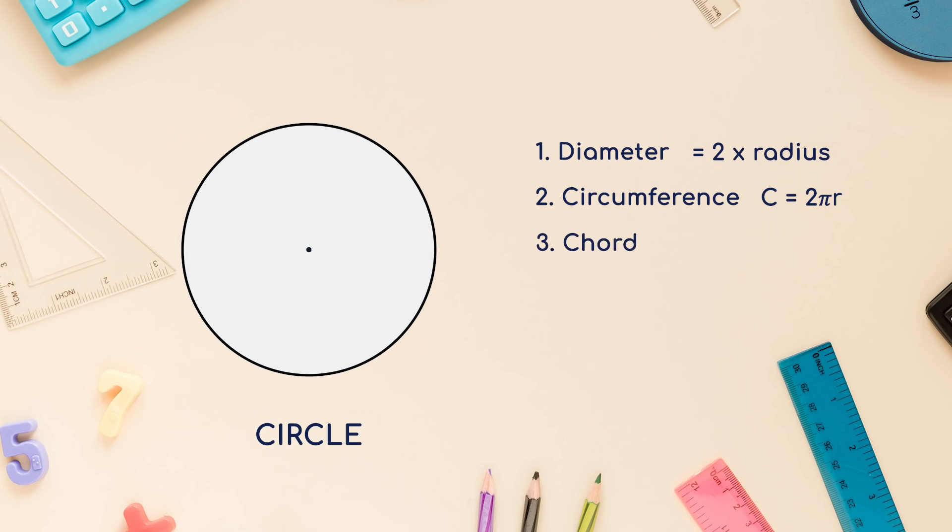3. Chord, a chord is a line segment joining any two points lying on the same circle. 4. Arc, a piece of a circumference between two points is called an arc.